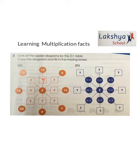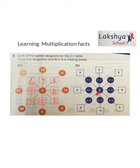Two multiplied by which number gives you 14? We know that two sevens are 14. The same way, two multiplied by which number gives you 6? It is two multiplied by 3. Here: two eights are 16, two twos are 4, two fours are 8, two tens are 20, two nines are 18, and two sixes are 12.